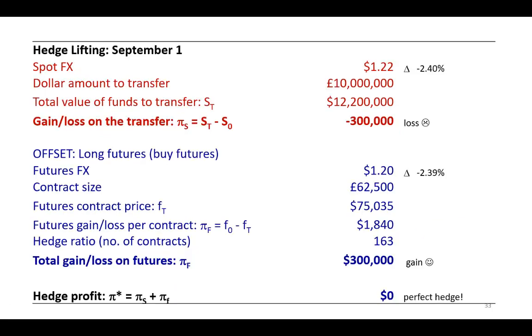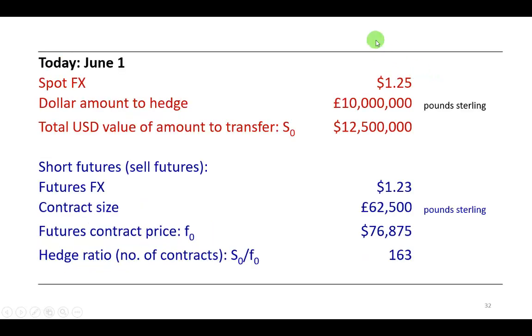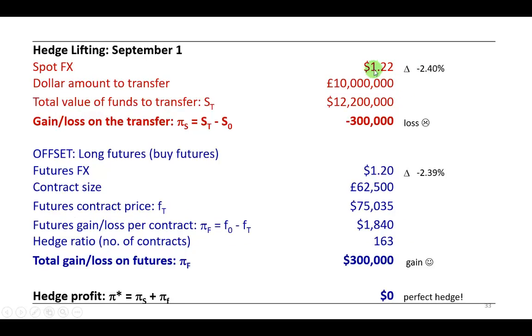So now let's see how things are going to shake out at hedge lifting period in September. So let's say that the spot exchange rate has indeed gone down by 2.4% from $1.25 to $1.22, which means that the 10 million pounds that you're trying to bring back to the United States is now worth $12.2 million, down from $12.5 million. So it's a loss of $300,000. And that accounts for your sad face right there.